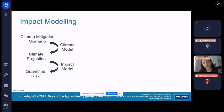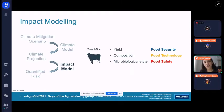The case study for our case is cow milk. And specifically, we are aiming to build models that are accounting for the impact of climate change on yield, milk composition, and the microbiological state, which means that we are accounting for food security, food technology, and food safety aspects.